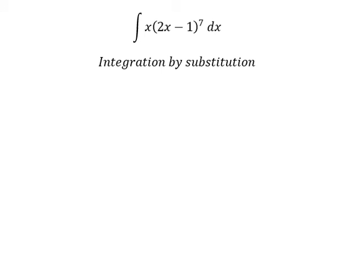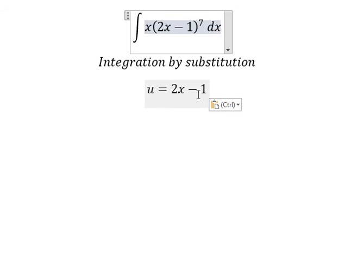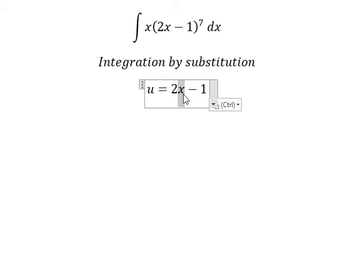So I will put u equals 2x minus 1. Because we still have x, we need to find the value of x. We put negative number 1 on the left and then divide both sides by number 2.